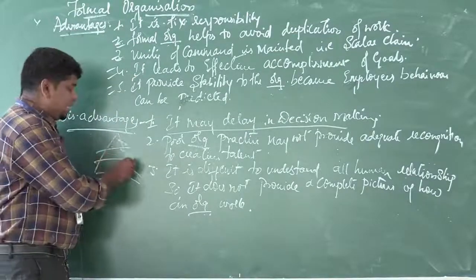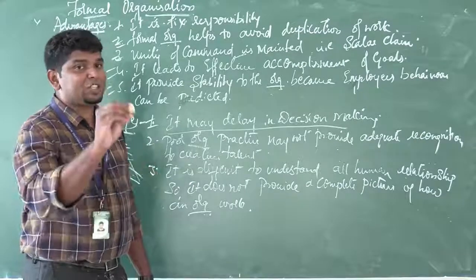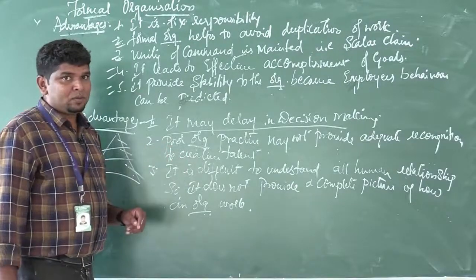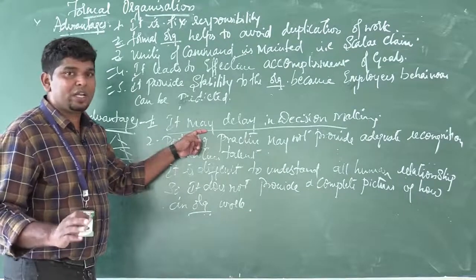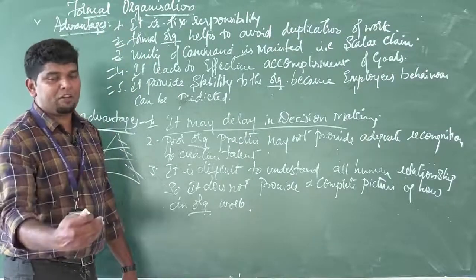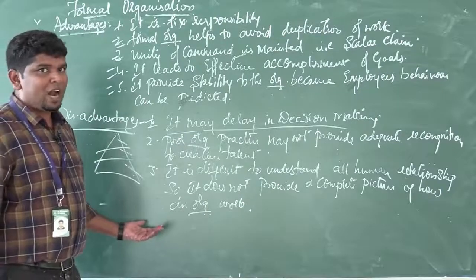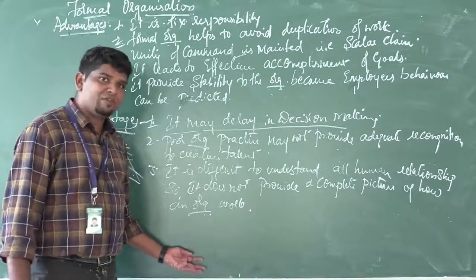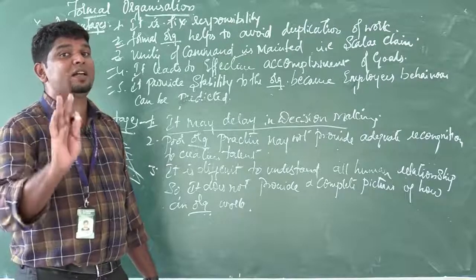With top level, middle level, and low level management, whatever has to be done by the employees, you must ask your seniors or superiors or head of the department. This leads to delay in decision making. If something fast has to be done, you cannot do it because of the hierarchy — the top level must send a report to the middle level, the middle level to the low level, and only then can the work be done.